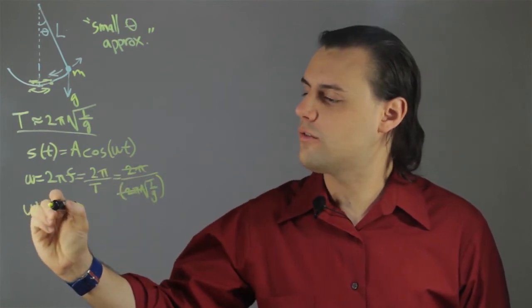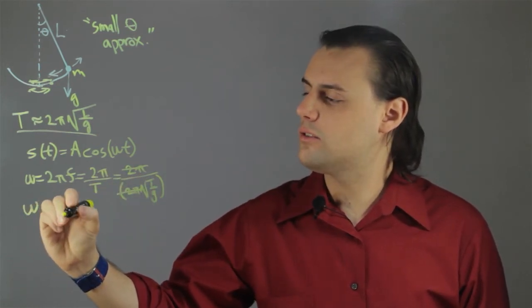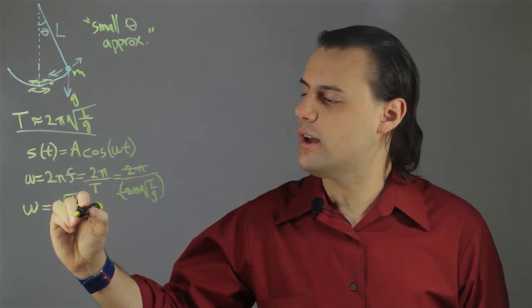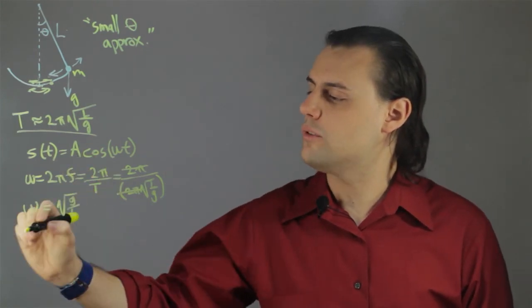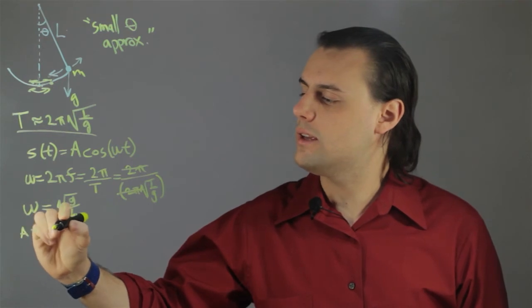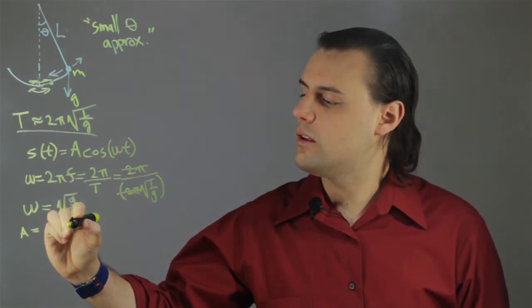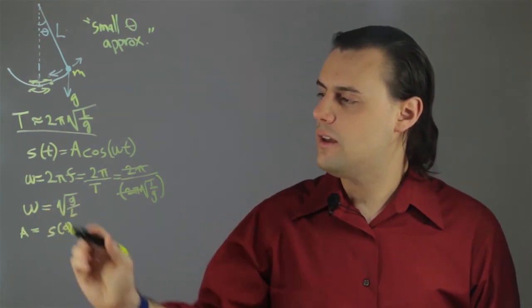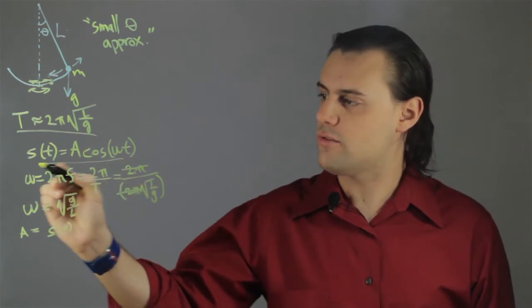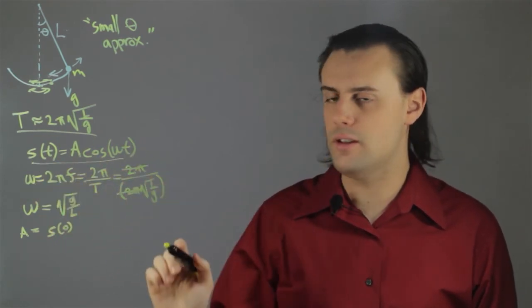So my angular frequency is simply square root of g over L. And my amplitude A is simply equal to the initial position. Now that I have an equation for the arc and I've solved for these parameters.